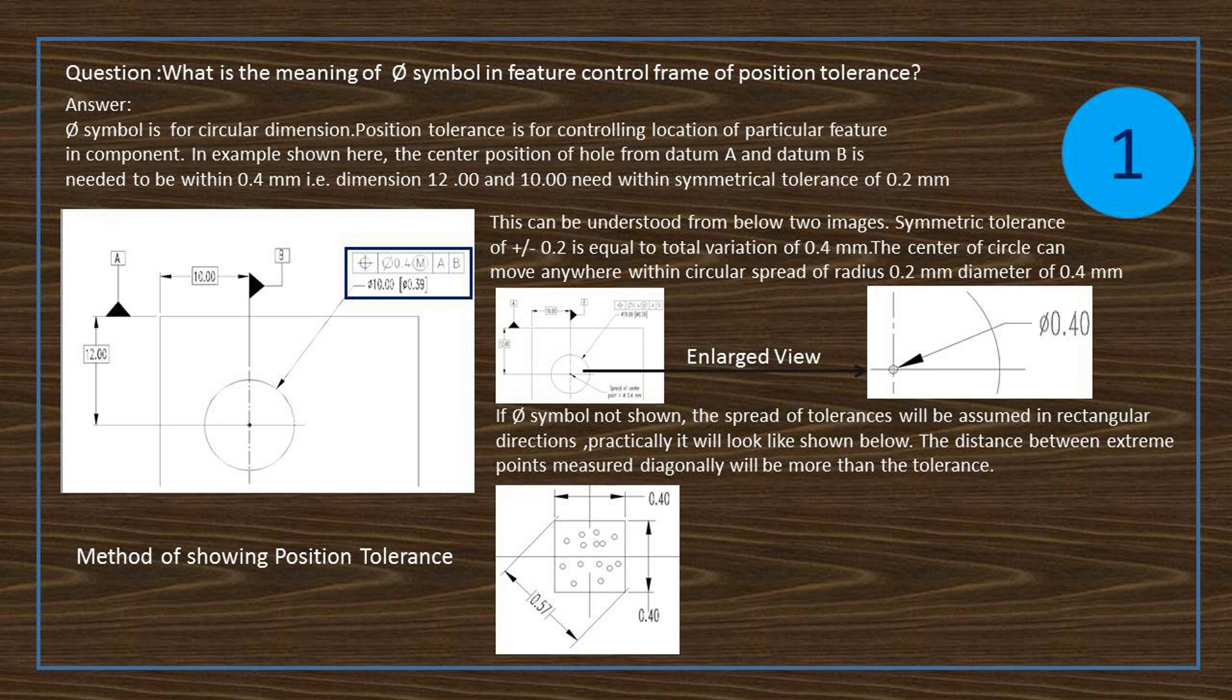If phi symbol is not shown, the spread of tolerances will be assumed in rectangular directions. Practically it will look like shown below. The distance between extreme points measured diagonally will be more than the tolerance.